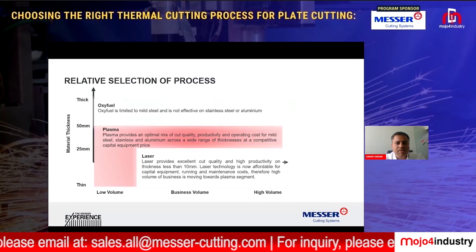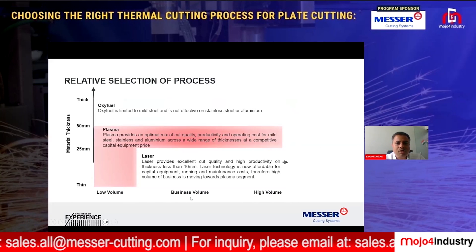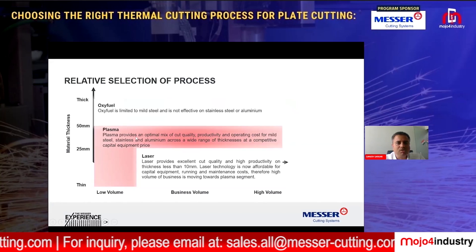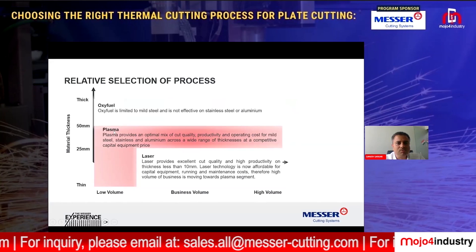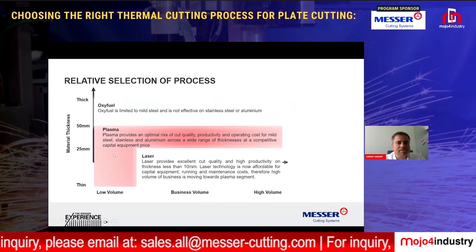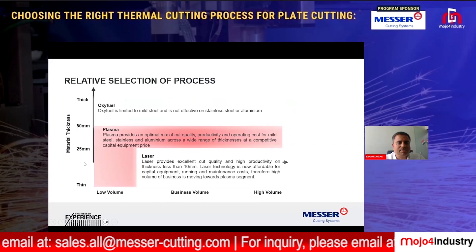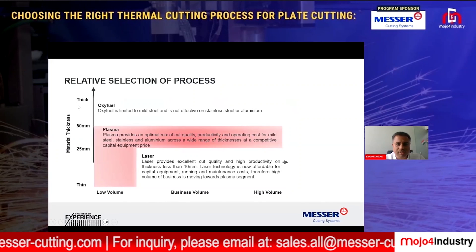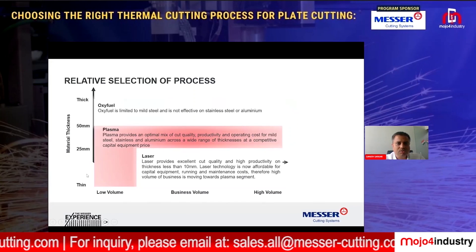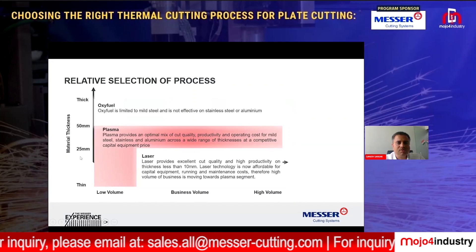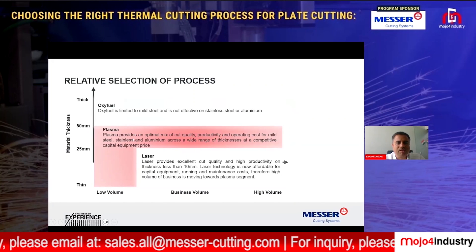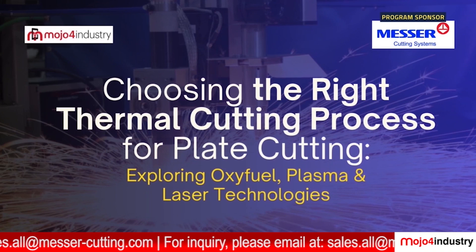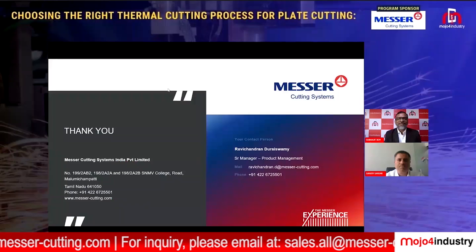The selection guide shows that for low to high business volume on the x-axis, and thin to thick material on the y-axis, laser is ideal for thin materials, plasma for 25 to 50 mm, and oxyfuel for thicker materials. This helps you choose the right process based on both volume and thickness requirements.